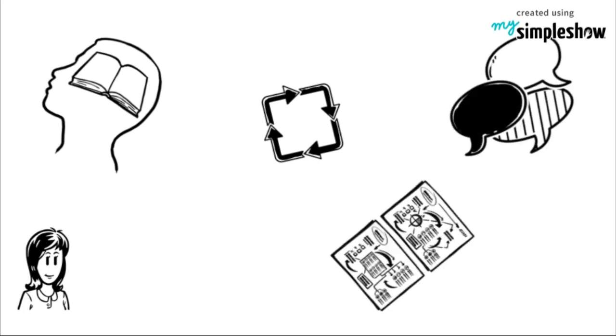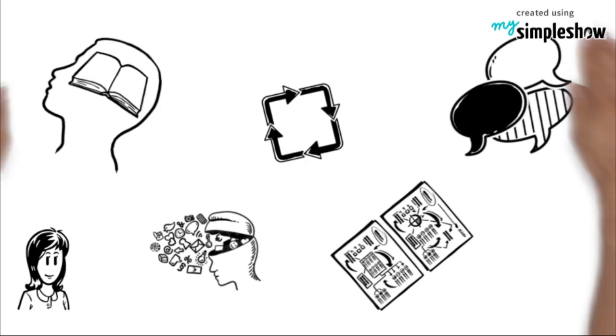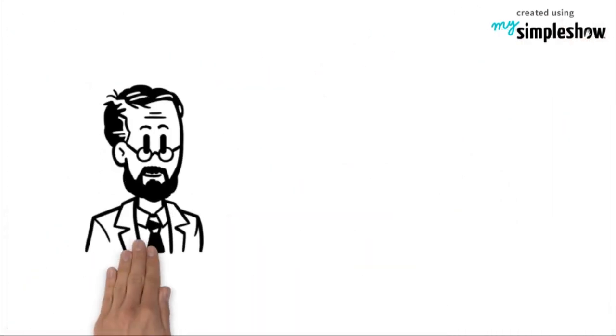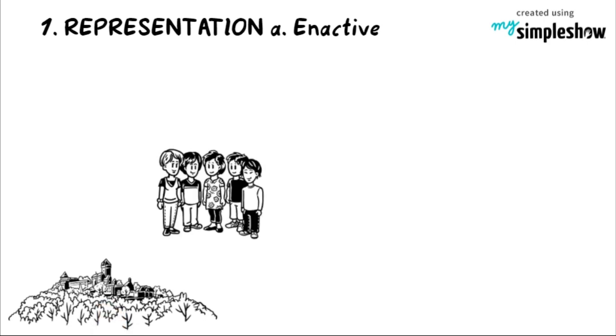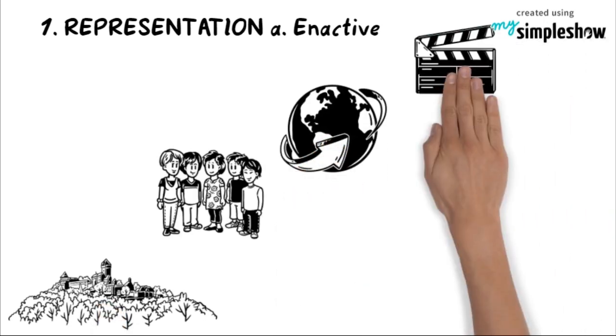Bruner's main concepts: There are three representations. First is enactive. At the earliest ages, children learn about the world through actions on physical objects and the outcome of these objects.